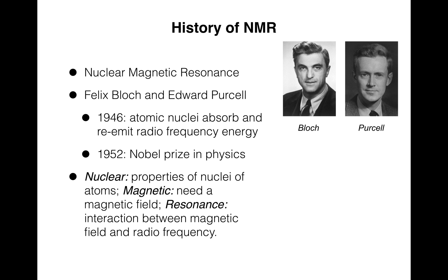So the history: magnetic resonance imaging, when it was first developed, was called nuclear magnetic resonance. Felix Bloch and Edward Purcell were two of the many scientists involved in developing this technology. Around 1946, it was discovered that atomic nuclei can absorb and then re-emit radiofrequency energy. This discovery led to Bloch and Purcell getting the Nobel Prize in Physics in 1952. The name nuclear magnetic resonance — nuclear refers to just the properties of the nuclei of atoms, magnetic means you need a strong magnetic field to get it to work, and resonance is the idea of an interaction when there's a magnetic field and radiofrequency pulses projected into the system.